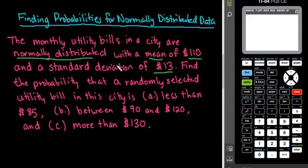For this, the situation that we have is the monthly utility bills in a city are normally distributed with a mean of $110 and a standard deviation of $13. Find the probability that a randomly selected utility bill in the city is less than $85, between $90 and $120, and more than $130.